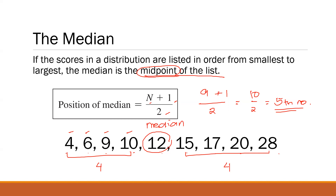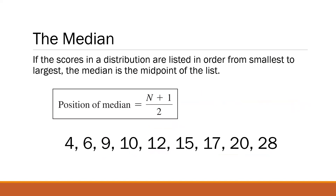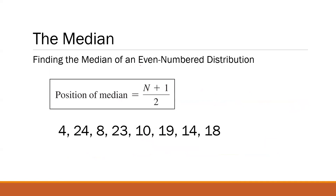However, in this example we're dealing with an odd-numbered distribution, so it's easy to find the center. But what if we're dealing with an even-numbered distribution? In an even-numbered distribution, there are two middle values. So what should we do? We get the average of the two middle values.